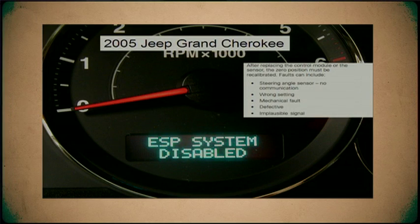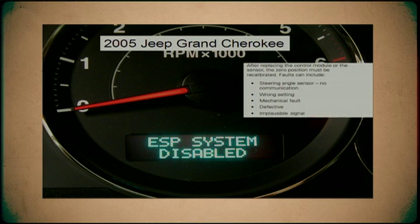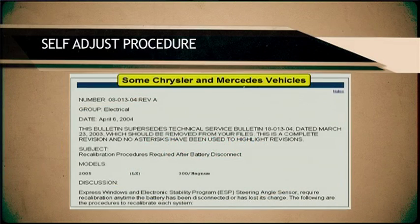The most common reason is you get a warning light on the dash — for example, the stability control program is disabled. It may have a mechanical fault, may be defective, may have a bad signal. You put a new one in and you have to reset it so we can put it to zero. The self-adjust procedure is one of my favorites because all it involves is turning the steering wheel.